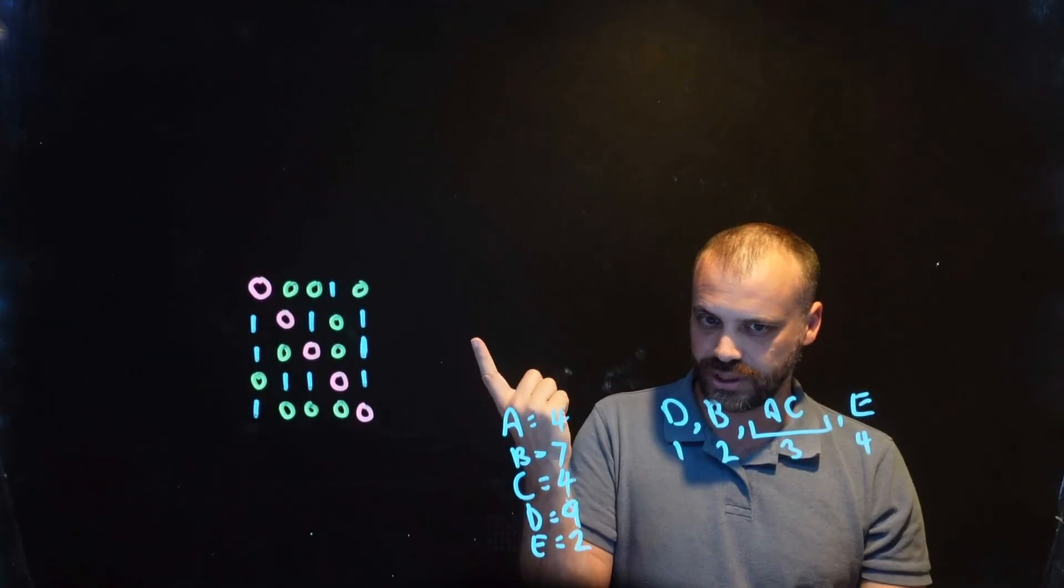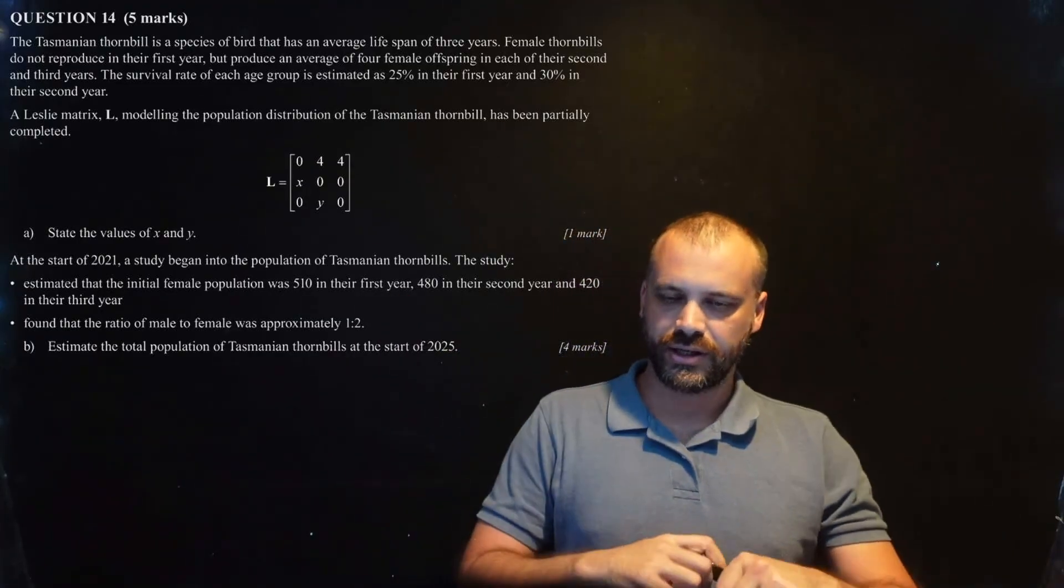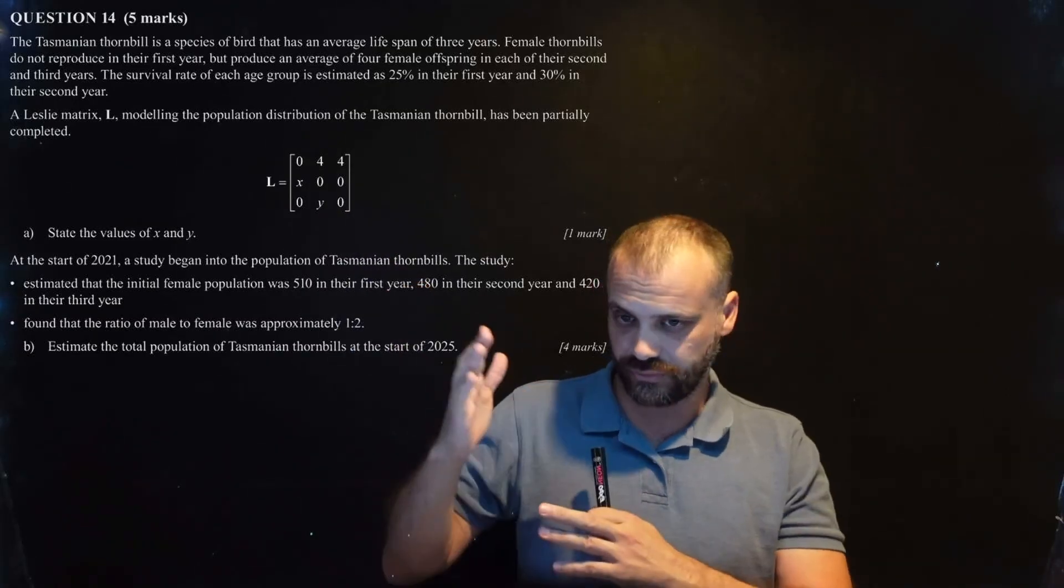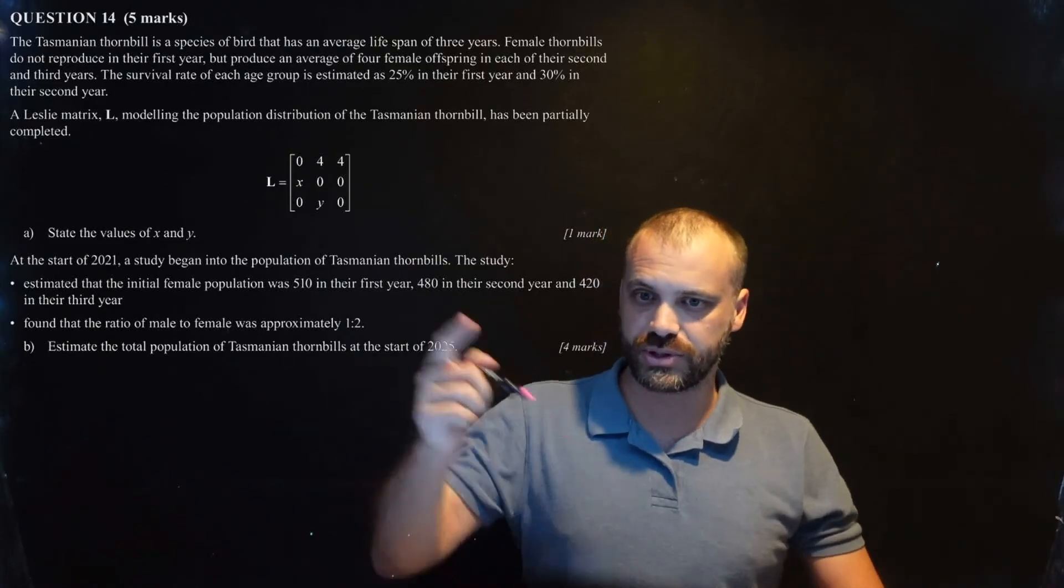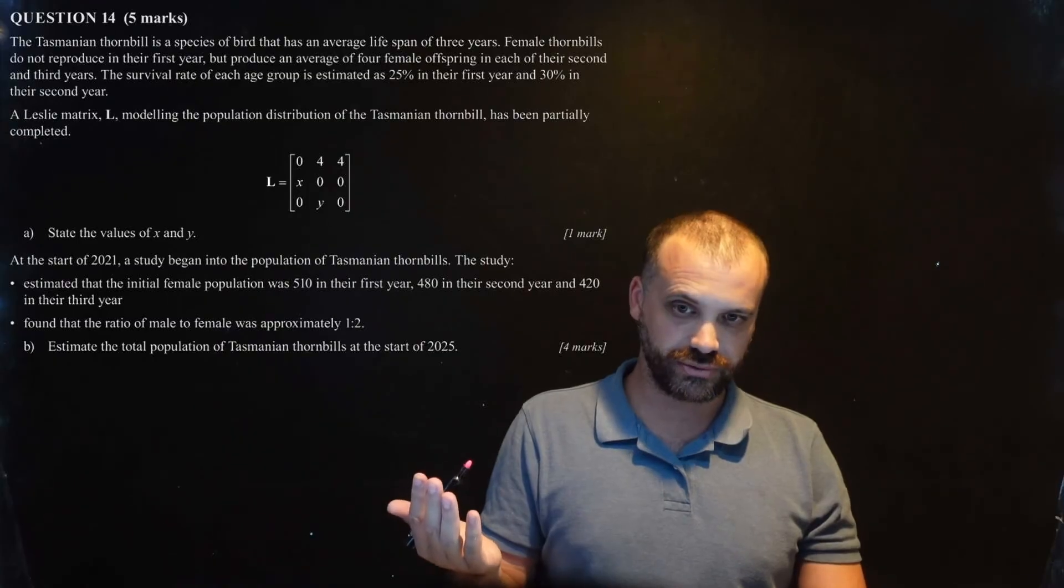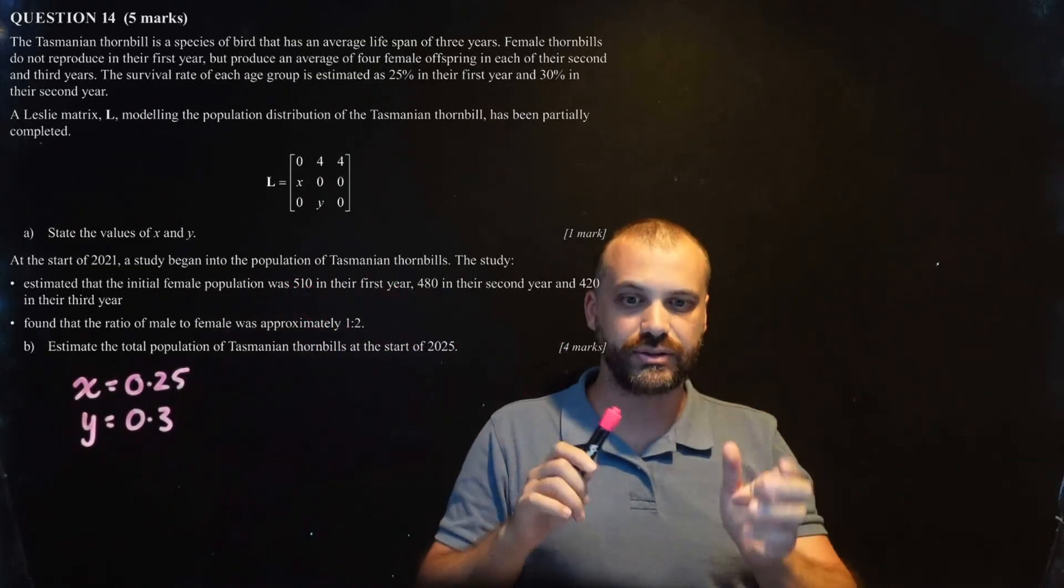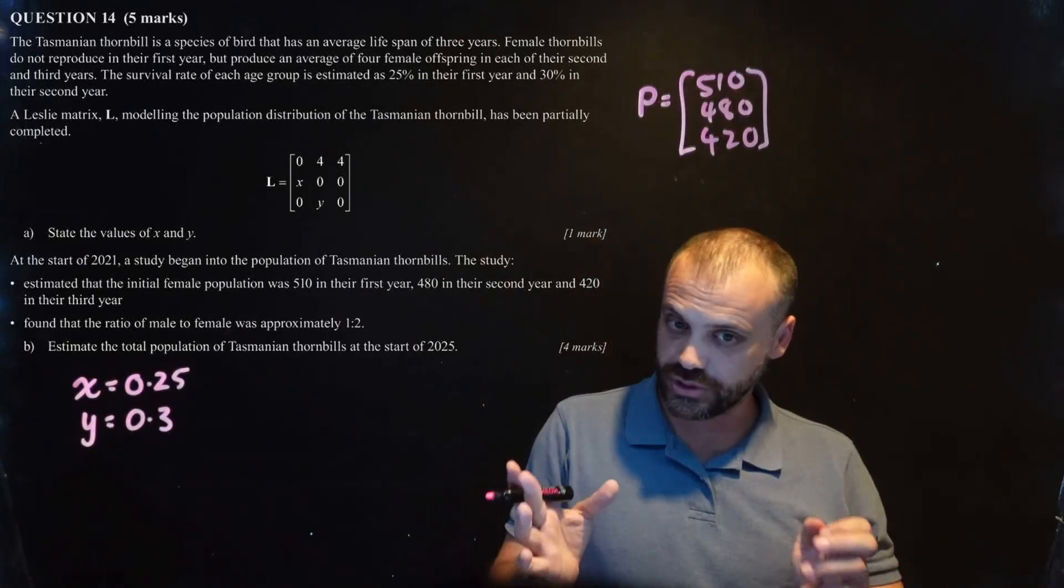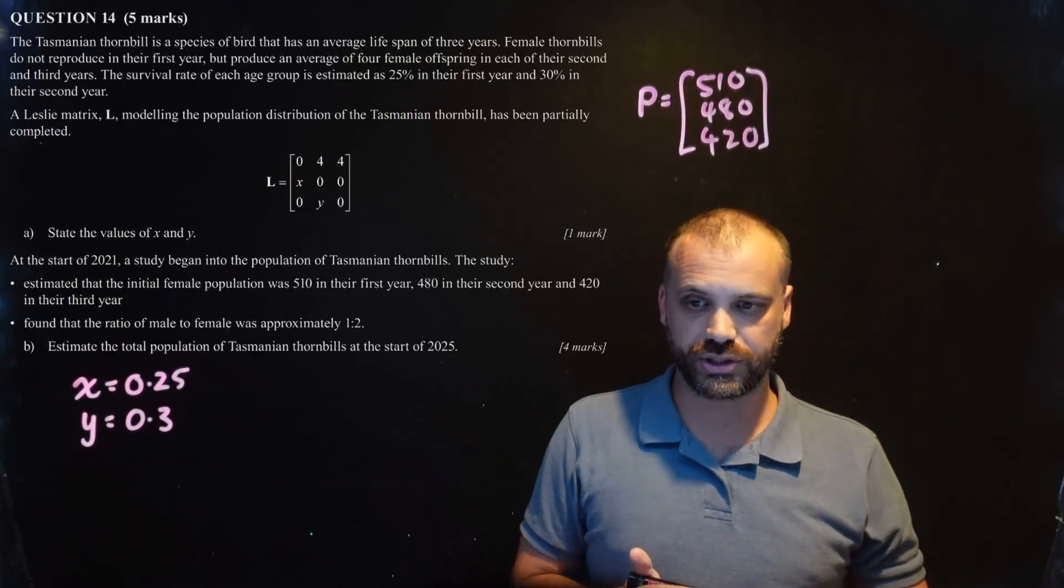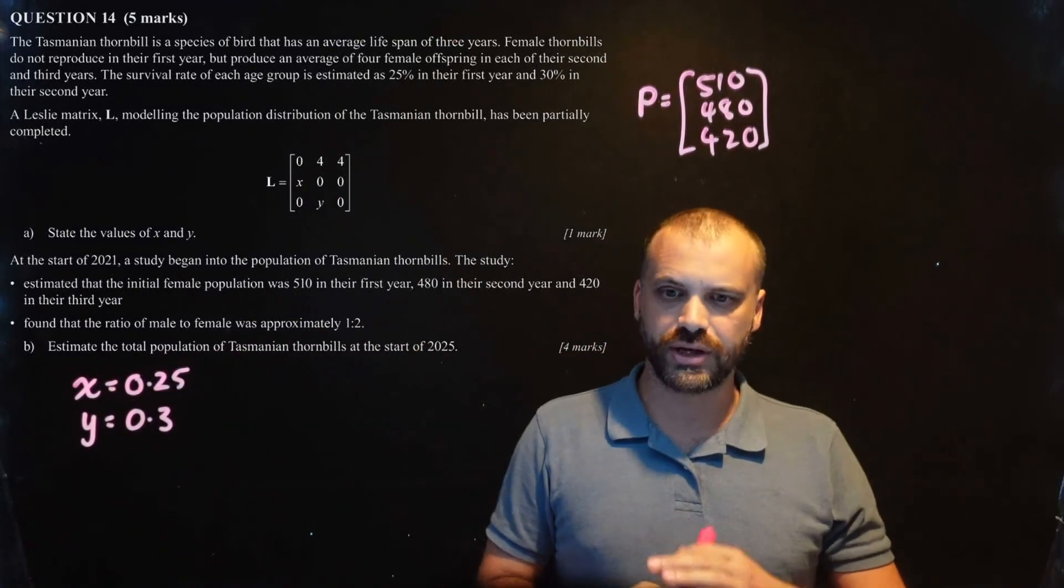Okay. Last question. Let's celebrate before we go. Now, I must have been feeling kind this week. Because, after maybe last week's massive last question. Nice and easy. Leslie matrices. Ah. Okay. Read through. There's an X and a Y here. And, it says, state the values of X and Y. So, X and Y represent survival rates of the 0th year age group and the 1st year age group. So, X and Y will be 25% in their 1st year and 30% in their 2nd year. 0.25 and 0.3. Alright. So, the next part of this question is interesting. Estimated that the initial female population was 510, 480 in their 2nd, and 420 in their 3rd years. So, that gives us an initial population matrix.